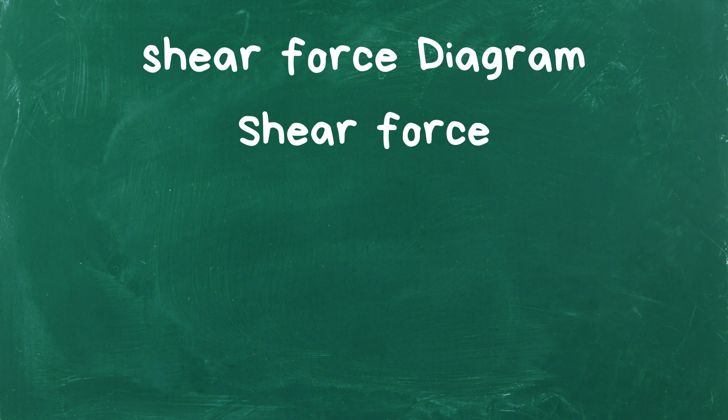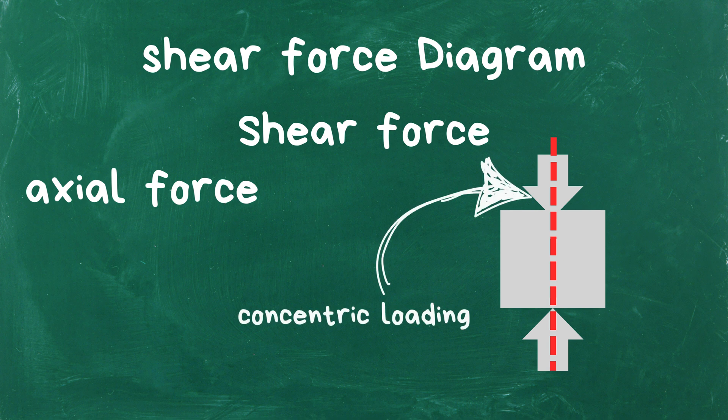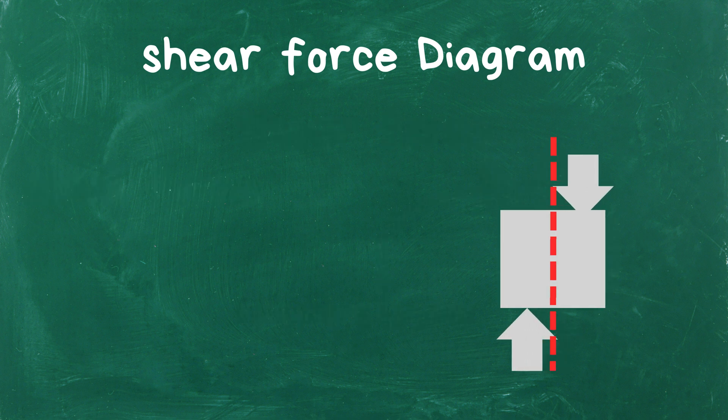Let's begin by grasping the concept of axial force, which acts along the centroidal axis of a structural member. When the axial force aligns precisely with the centroid of the member, it's termed concentric loading. Conversely, if the force doesn't align with the centroid, it's referred to as eccentric loading.